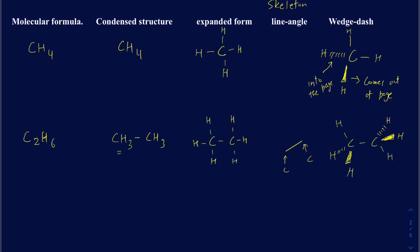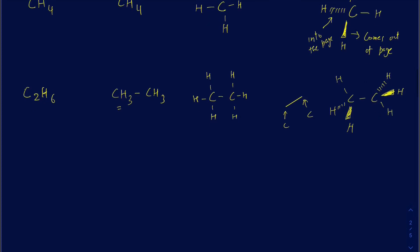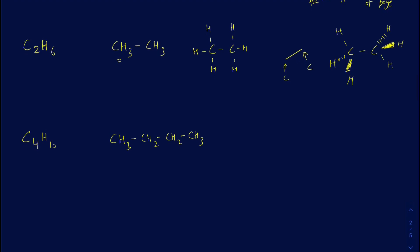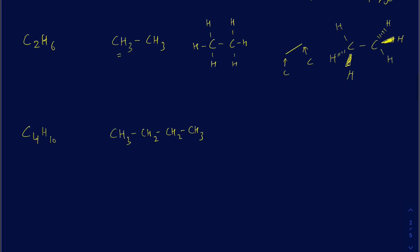Suppose I have C4H10 — this is still going to be an alkane. When I write the condensed structure formula for that, I would have three hydrogens on the first carbon, two hydrogens on the second carbon, two hydrogens on the third carbon, and three hydrogens on the last carbon. You want to make sure you have the correct number of carbons and hydrogens.